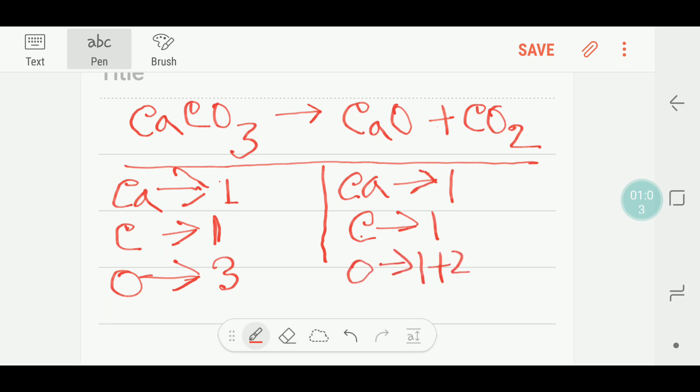Let's check. The number of calcium on both sides is equal, the number of carbon on both sides is equal, and the number of oxygen on both sides is equal. So this equation is balanced.